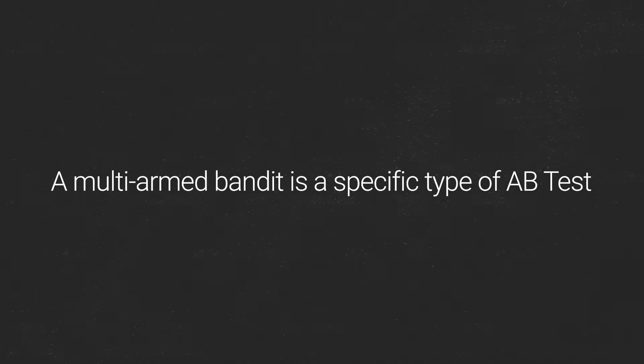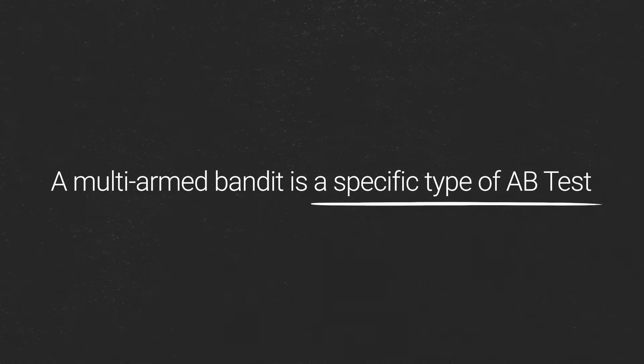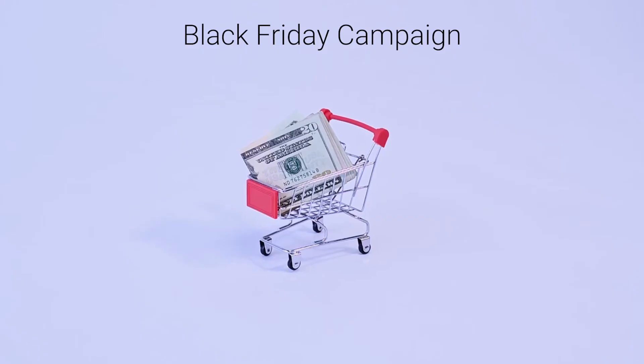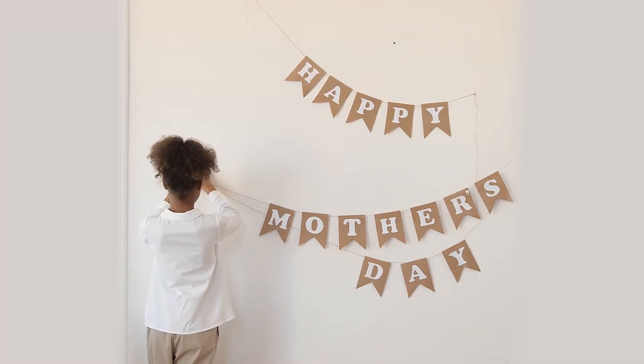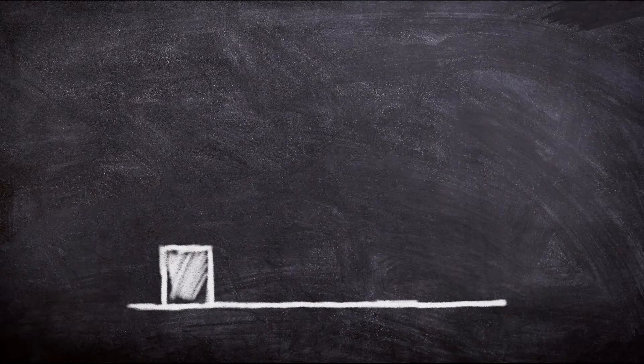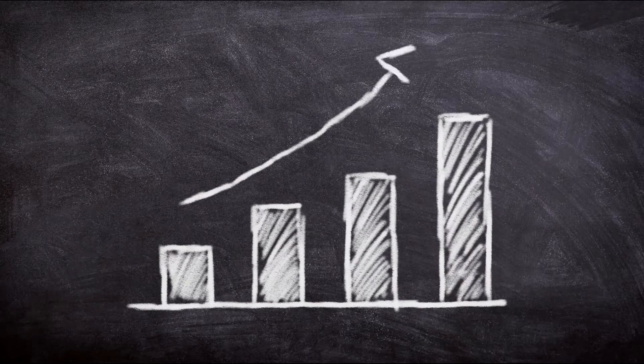A multi-arm bandit is a specific type of A-B test where you're saying, 'I don't have the luxury of testing for the next two weeks.' Two examples: one is a Black Friday campaign or a Mother's Day campaign. The campaign is going to run for only two days. So it's great that you want to run your A-B test for three or four weeks, but my whole campaign is only running for two days.